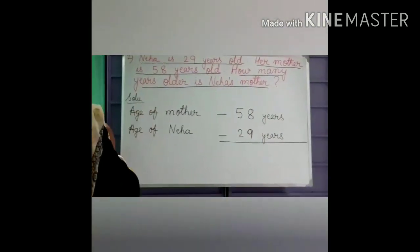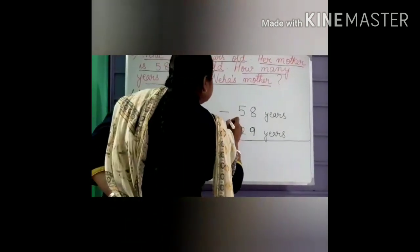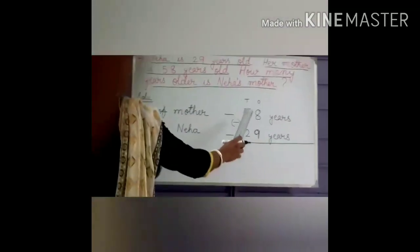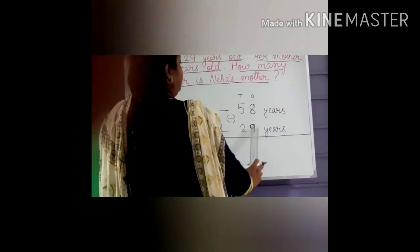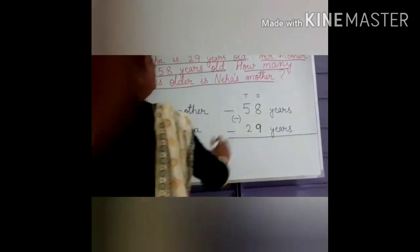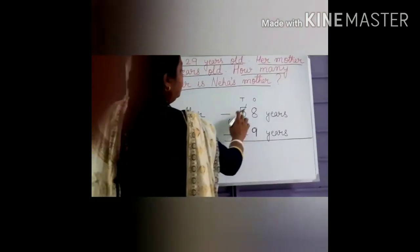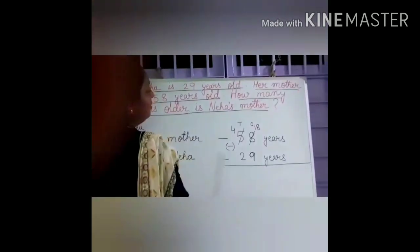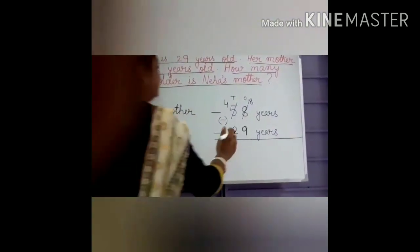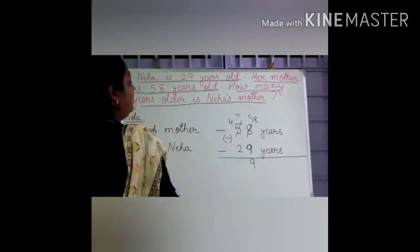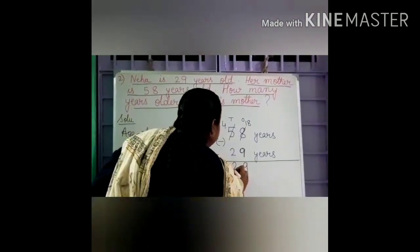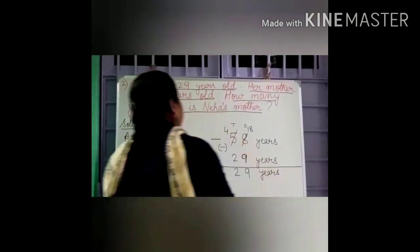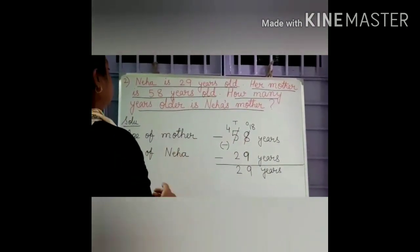How much older is Neha's mother than Neha? We have to find the difference. In the ones place we have 8 and 9. The 8 is smaller, so we have to make it bigger by borrowing. If we borrow 10 from the tens place, it becomes 4 in tens and 18 in ones. From 18 take away 9 — 9 remains. Then from 4 take away 2 — 2 remains. So the answer is 29. Neha's mother is 29 years older than Neha.